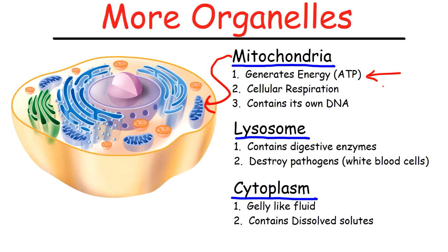Next up, we have the lysosome. The lysosome's purpose is to break down food — it contains digestive enzymes. And in white blood cells, it can also destroy pathogens. When a white blood cell engulfs a pathogen in a process known as phagocytosis, the lysosomes in those white blood cells can break down those pathogens or disease-causing agents into smaller components that can be used or recycled by the cell.